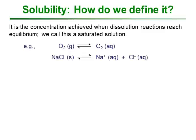How do we define solubility? It's the concentration achieved when dissolution reactions reach equilibrium — when this happens we have a saturated solution. An example might be dissolving or bubbling oxygen gas through water, or dissolving an excess of sodium chloride in water.